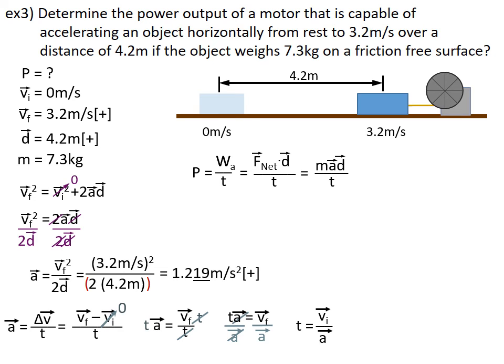Time equals velocity initial divided by acceleration. I sub my numbers in, run it through my calculator. And I get a time of 2.625 seconds.